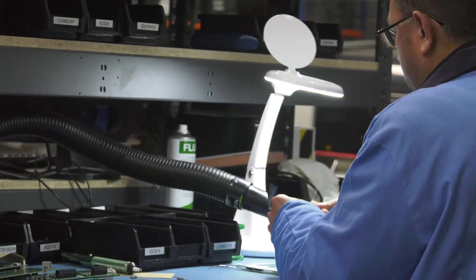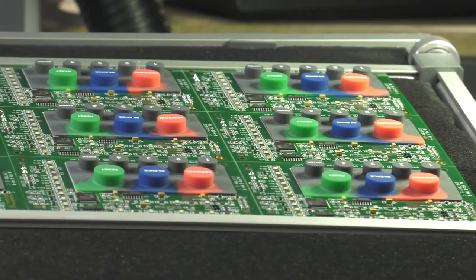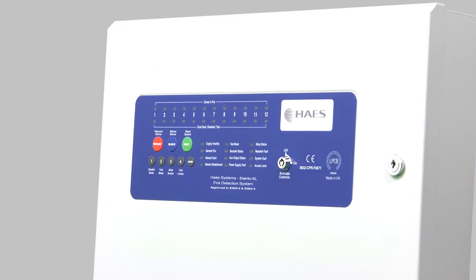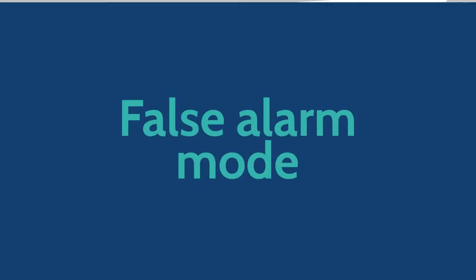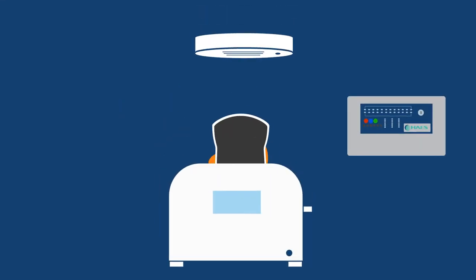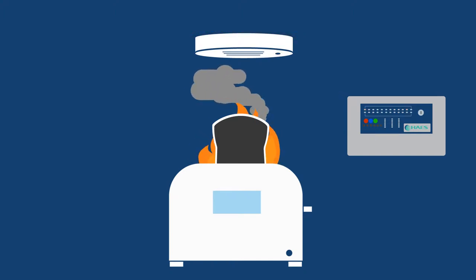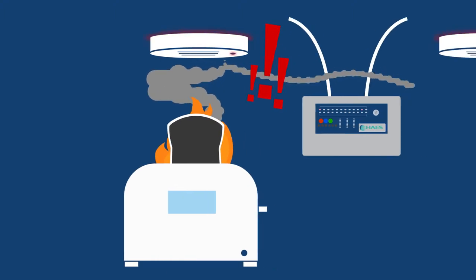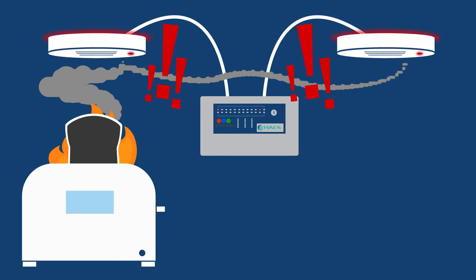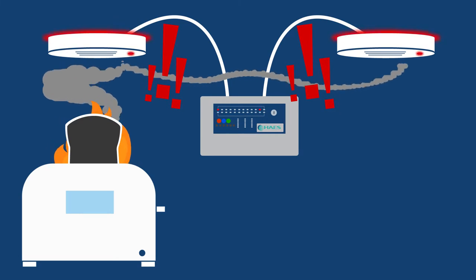The programming capability of this panel enables numerous configurations. Here are two examples. False alarm mode: if someone burns their toast and smoke is detected, the system will recheck a second time after a short delay and will only sound the alarms if there is still smoke detected, or the system will trigger the alarm if a second detector detects smoke, greatly reducing nuisance false alarms.